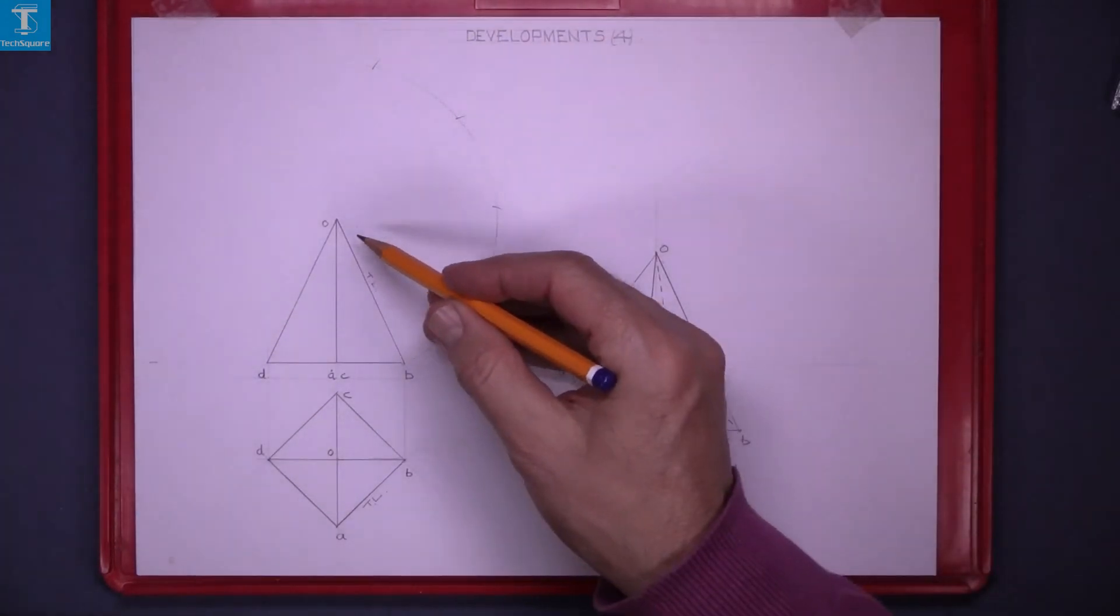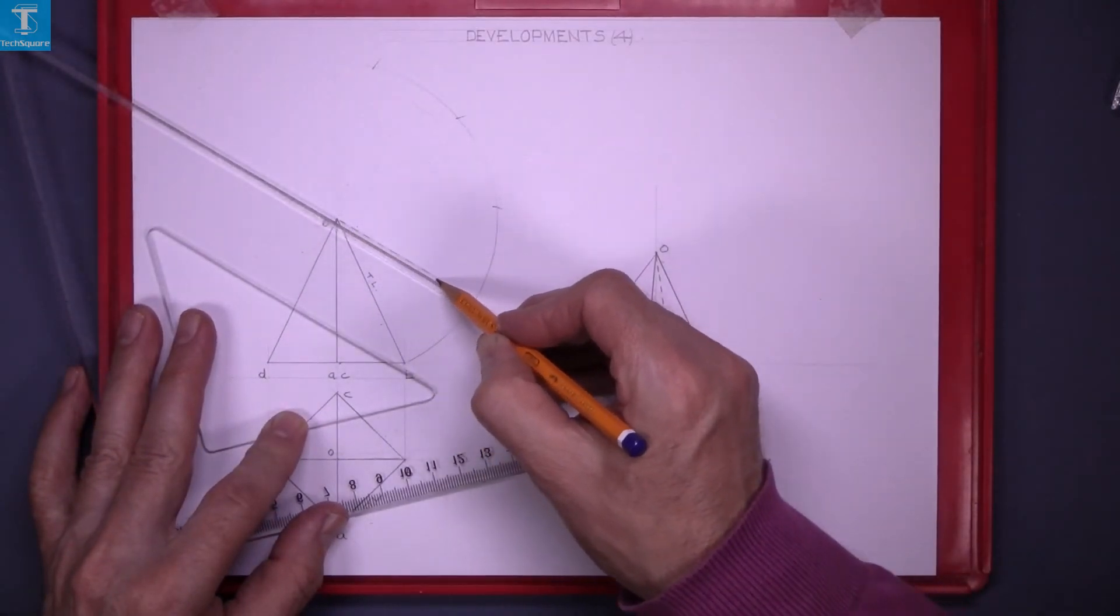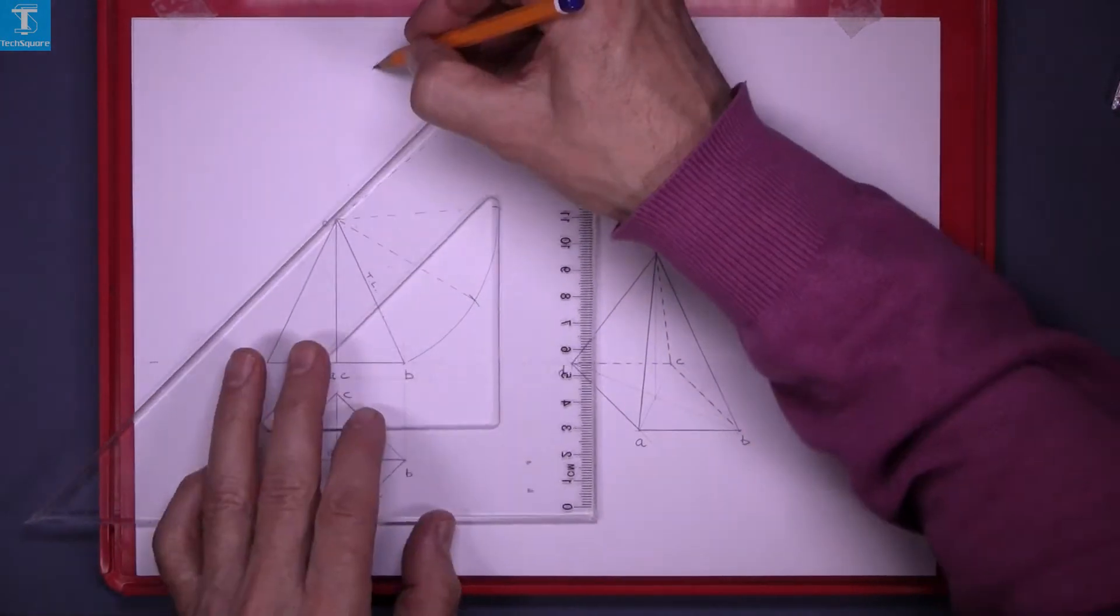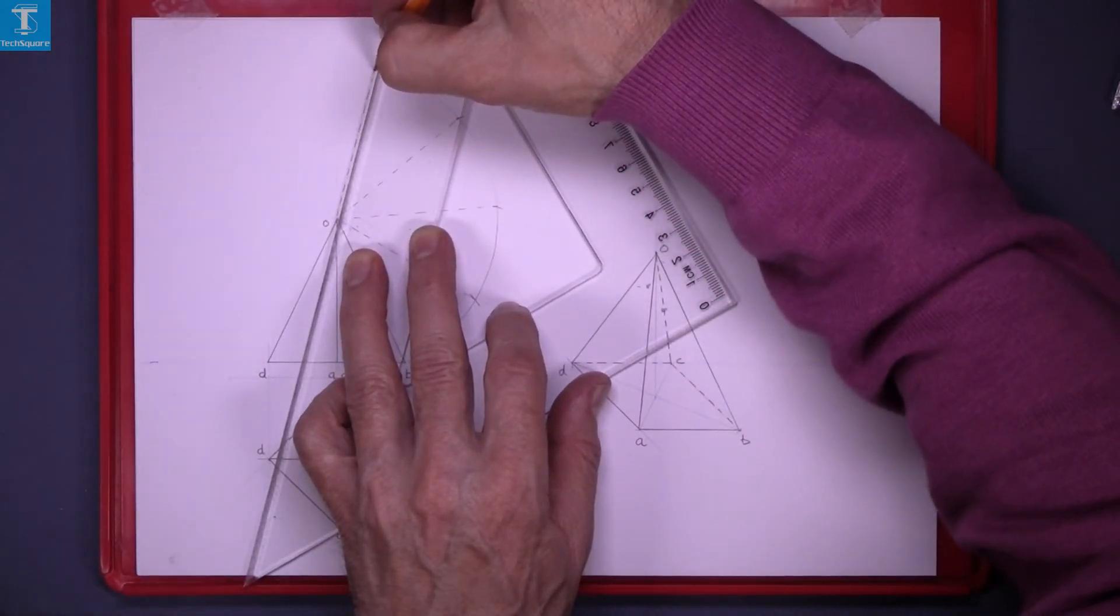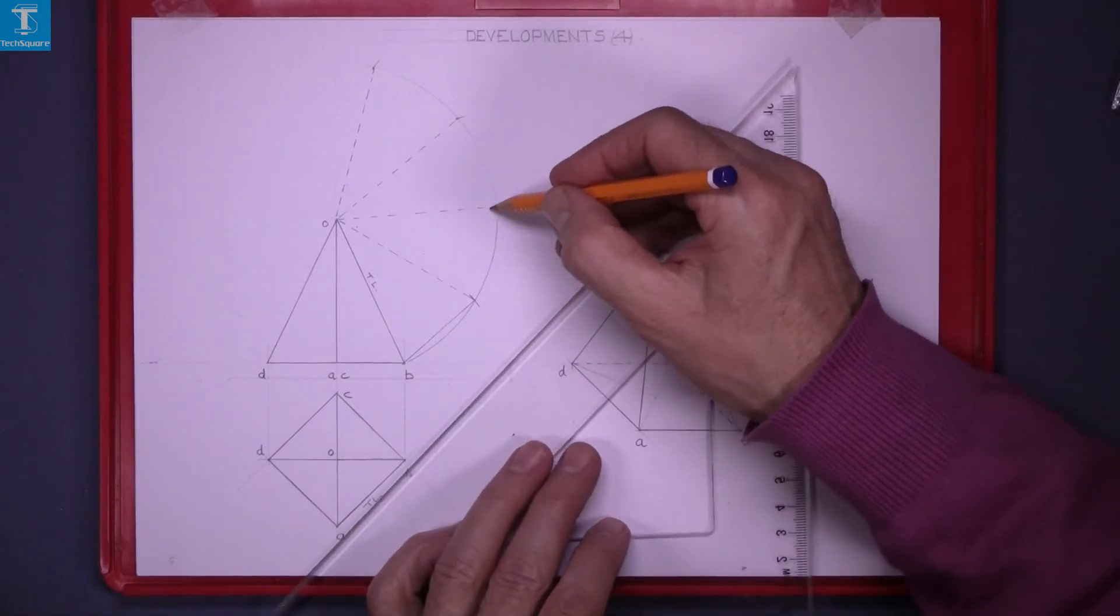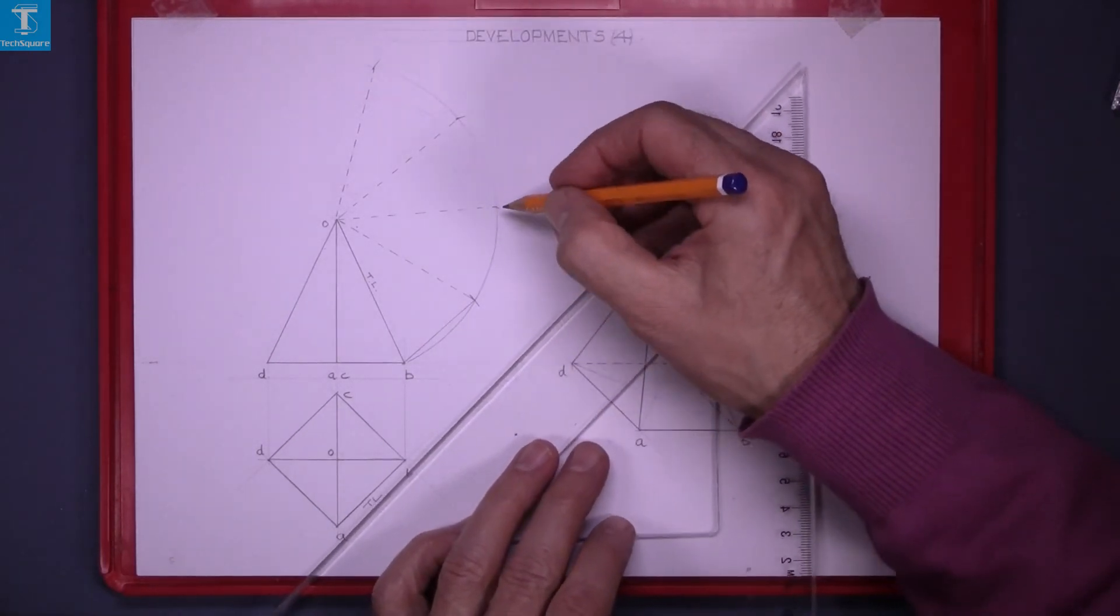And now join each of these points to the top point with a dotted line because it's going to be folded along that line. This top line should be a heavy line. Join the bottom. We'll put the base on out here so we'll make this a dotted line.